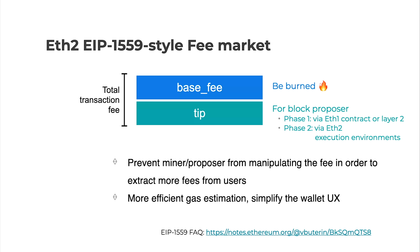There are two parts of the total transaction fee. The first part is the base fee that will be burned on-chain, and the second part is the tip — the ether amount that goes to the shard block proposer. In Phase 1, we expect that users will pay the fee through Layer 2 solutions or via the ETH2 contract. In Phase 2, the transaction fee could be paid directly through the ETH2 execution environments.